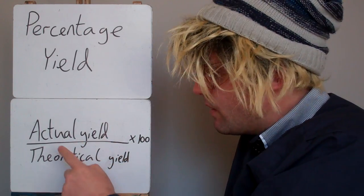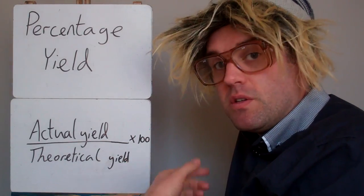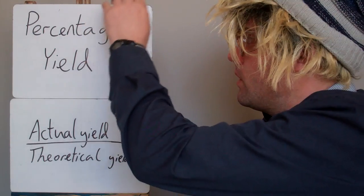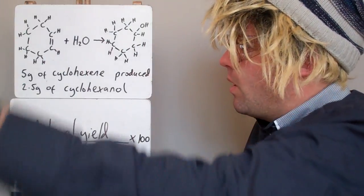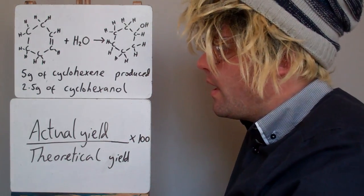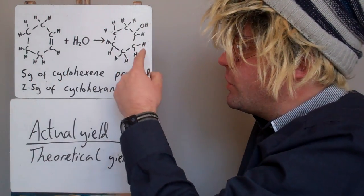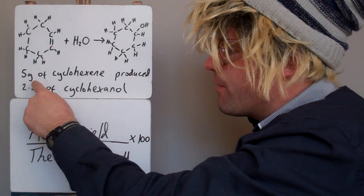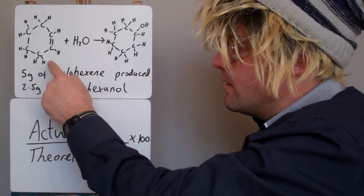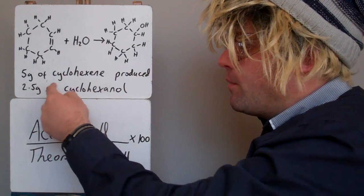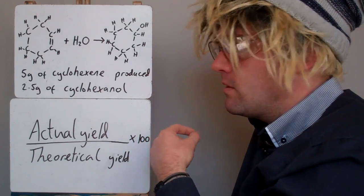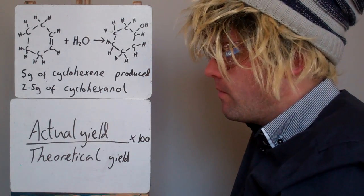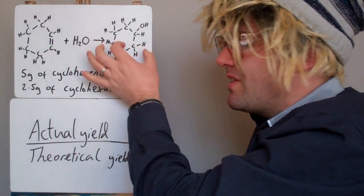What I'm going to look at then is how we can work out actual yield and theoretical yield to use this equation. If we have a look at an example, here we've got cyclohexene and we're producing cyclohexanol. If we start off with 5g of cyclohexene and do the experiment, we produce 2.5g of cyclohexanol. Now what you can't do is just do 2.5 divided by 5, because the molecular masses of these two are different.